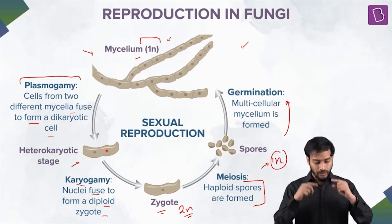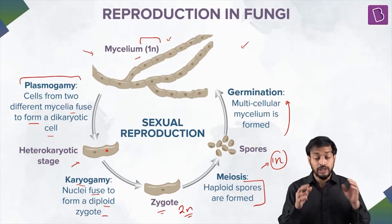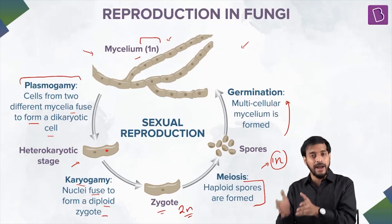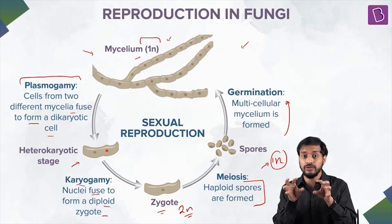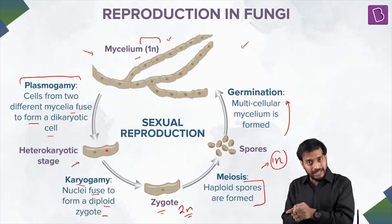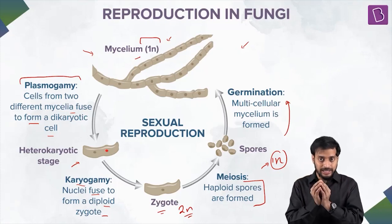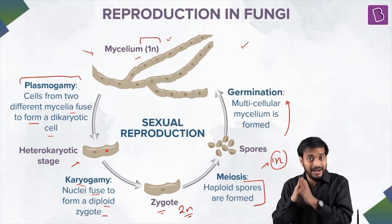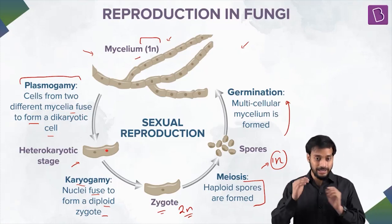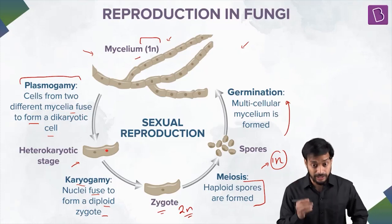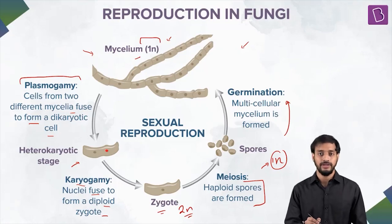To revise: two compatible hyphae fuse — protoplast fusion is plasmogamy. After protoplast fusion, there is a dikaryotic phase with two unfused nuclei — the dikaryon. Then the two nuclei fuse to form a diploid zygote — karyogamy. This zygote undergoes meiosis to form haploid spores, and these spores undergo germination to form the multicellular mycelium.